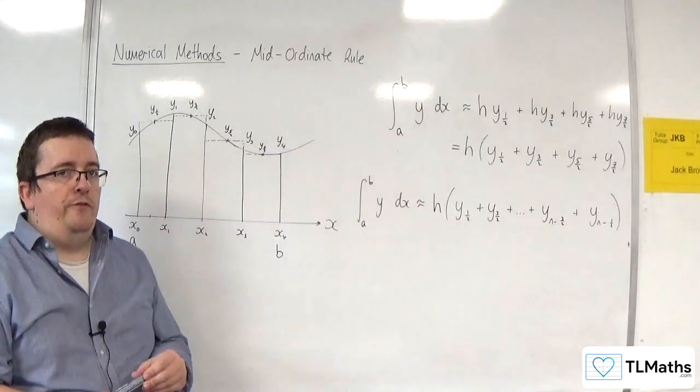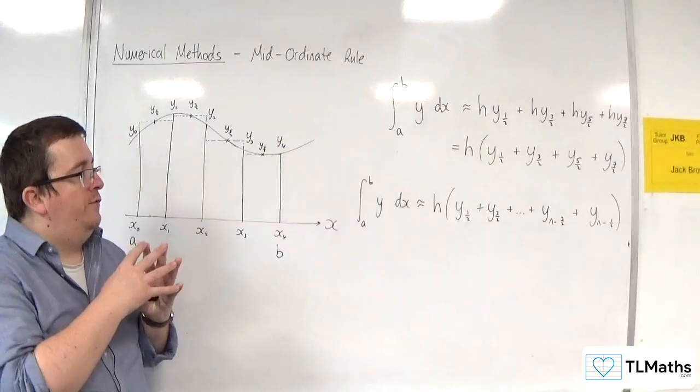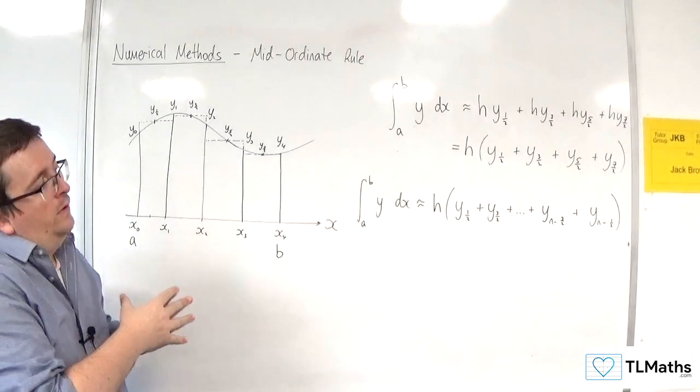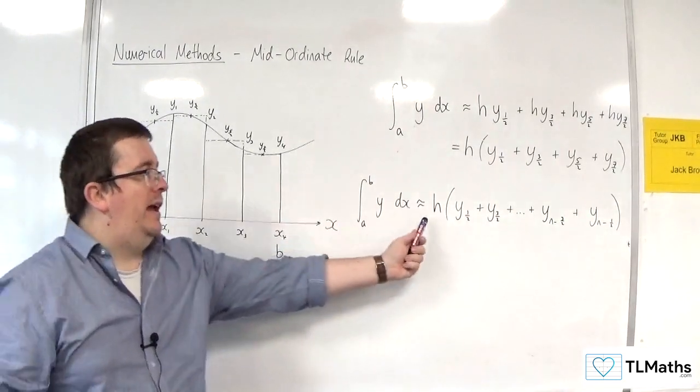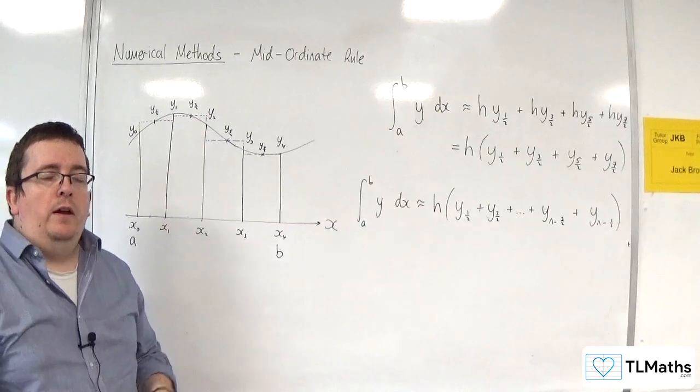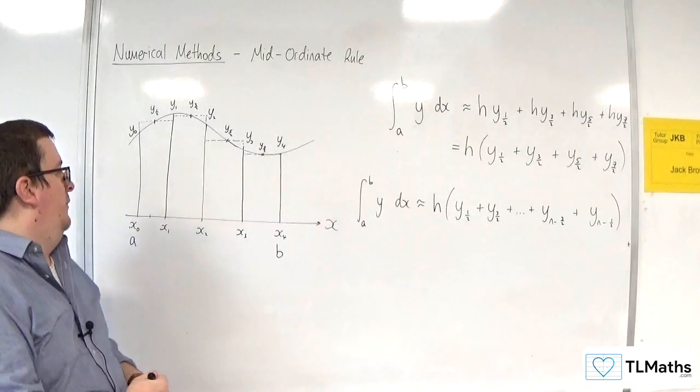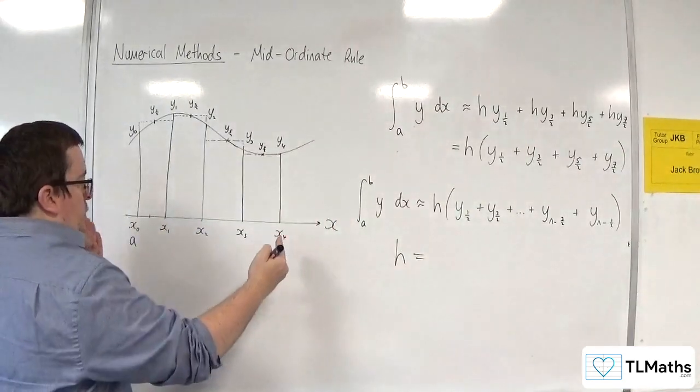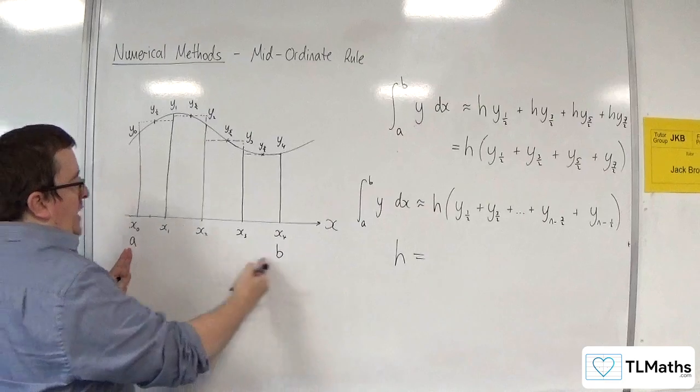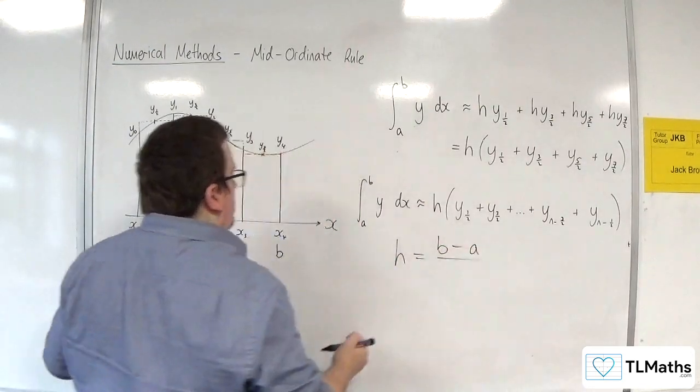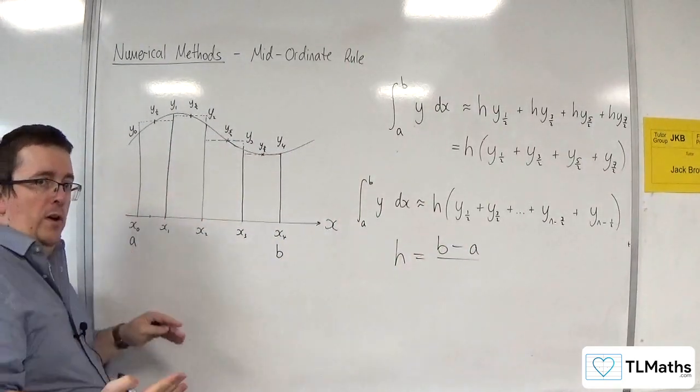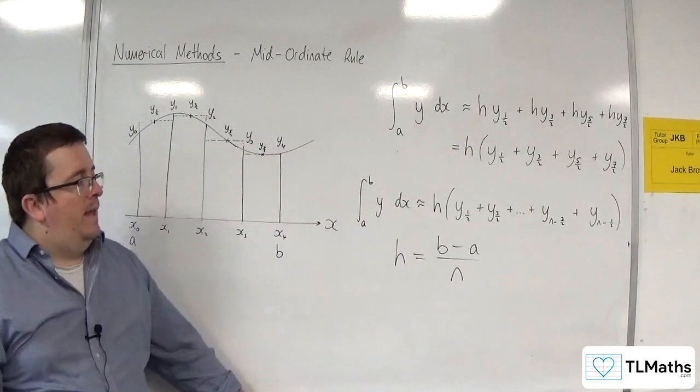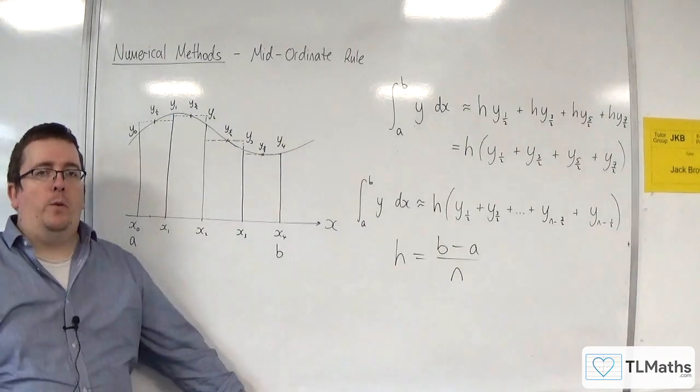It's very straightforward to use - just make sure you've got a table of values when doing this. h is calculated in much the same way as when you're using the trapezium rule, because it's the width of each strip. So h equals b minus a divided by the number of strips you are considering. The number of strips here is n, and that should be identified in the question.